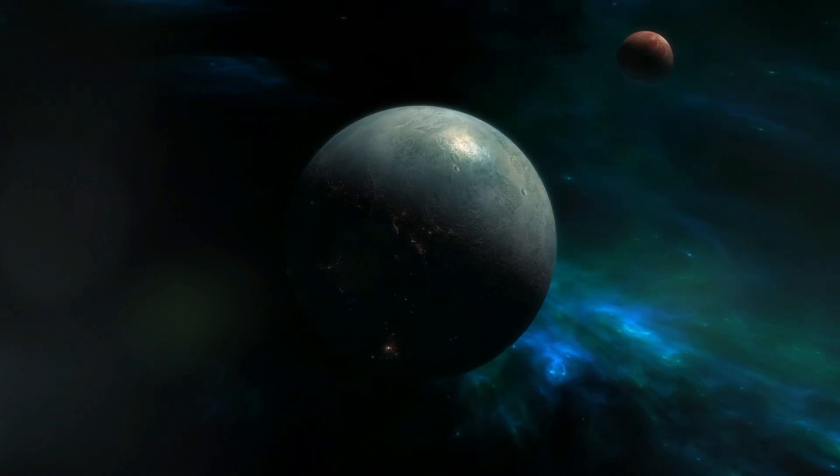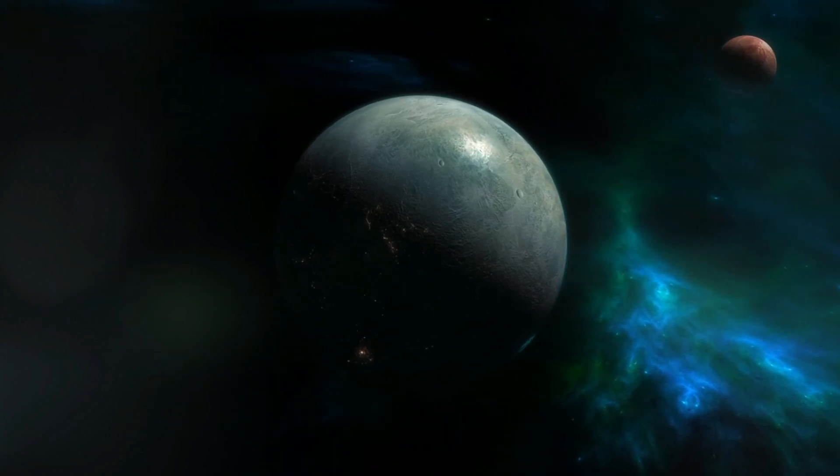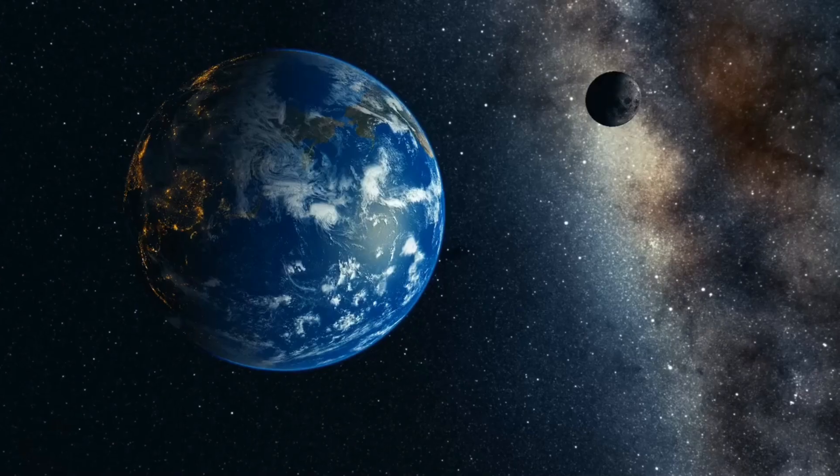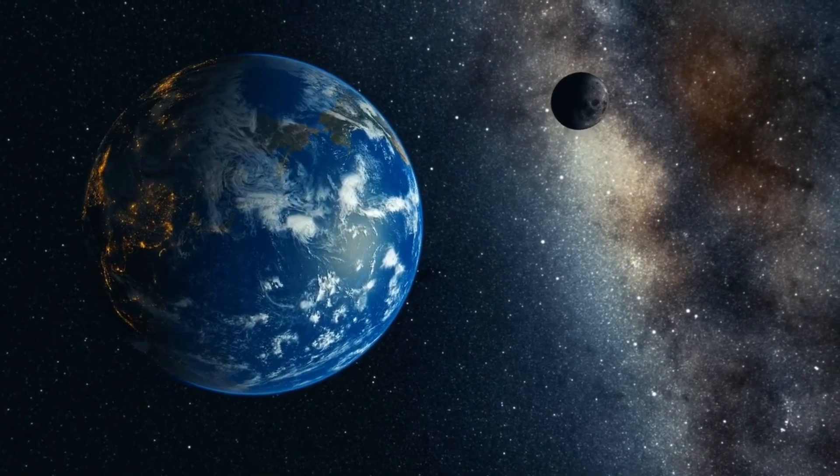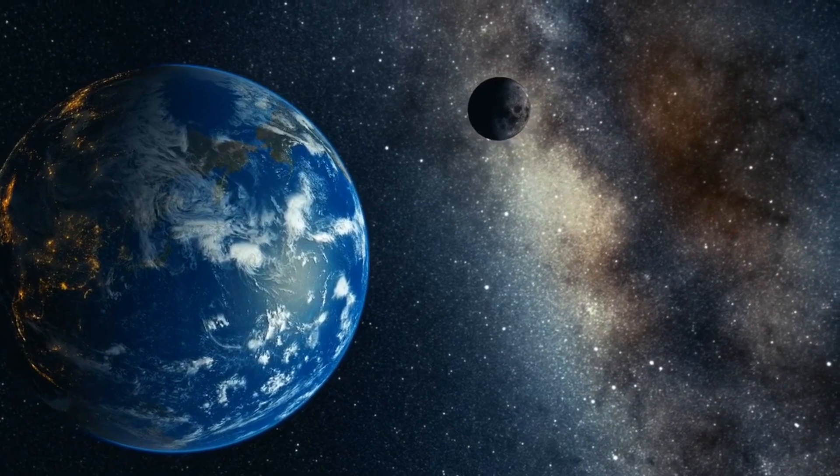Despite its proximity, Proxima b presents a world quite different from our own. It's about 30% more massive than Earth, with a remarkably short year of only 11.2 Earth days due to its close orbit around Proxima Centauri.